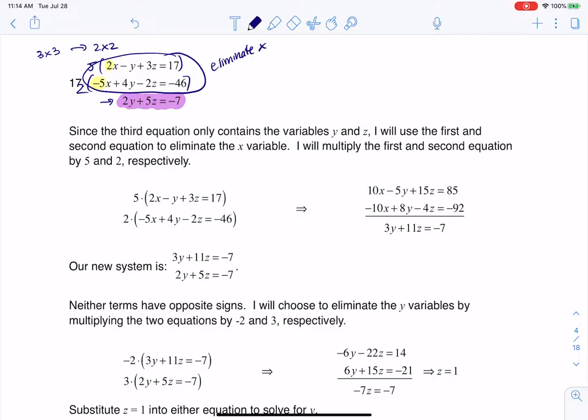I know it looks a little junked up, but that's what I'm doing here. I'm going to distribute the 5 to everything in that equation and distribute the 2 to everything in that equation. Then by design you can see the x's are going to eliminate.